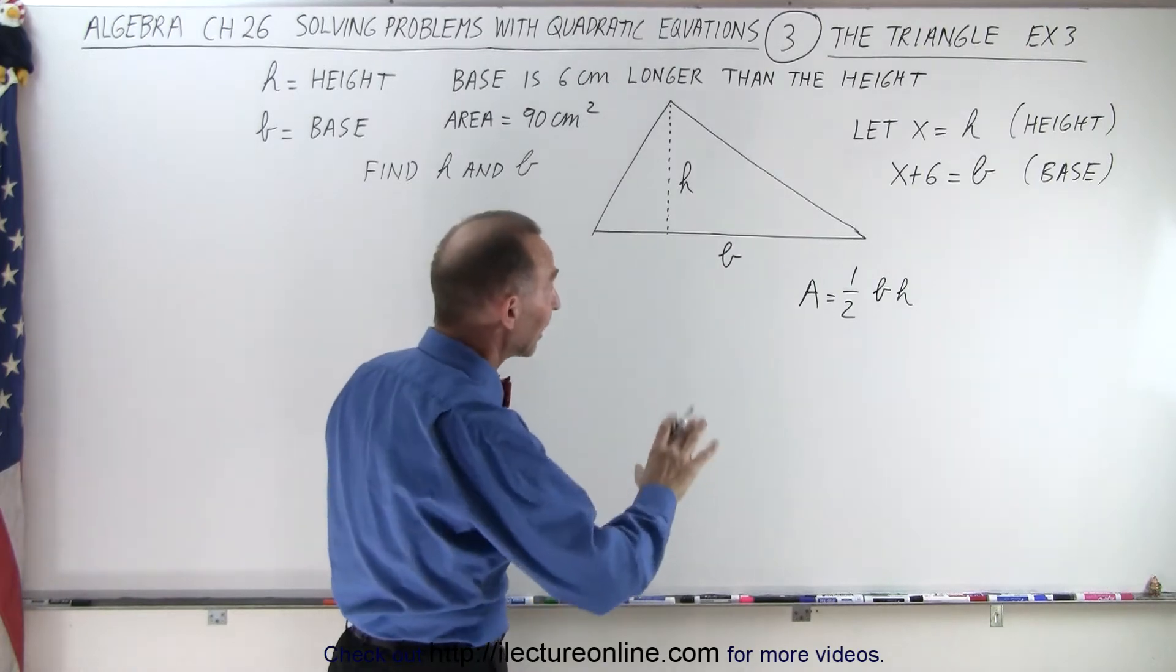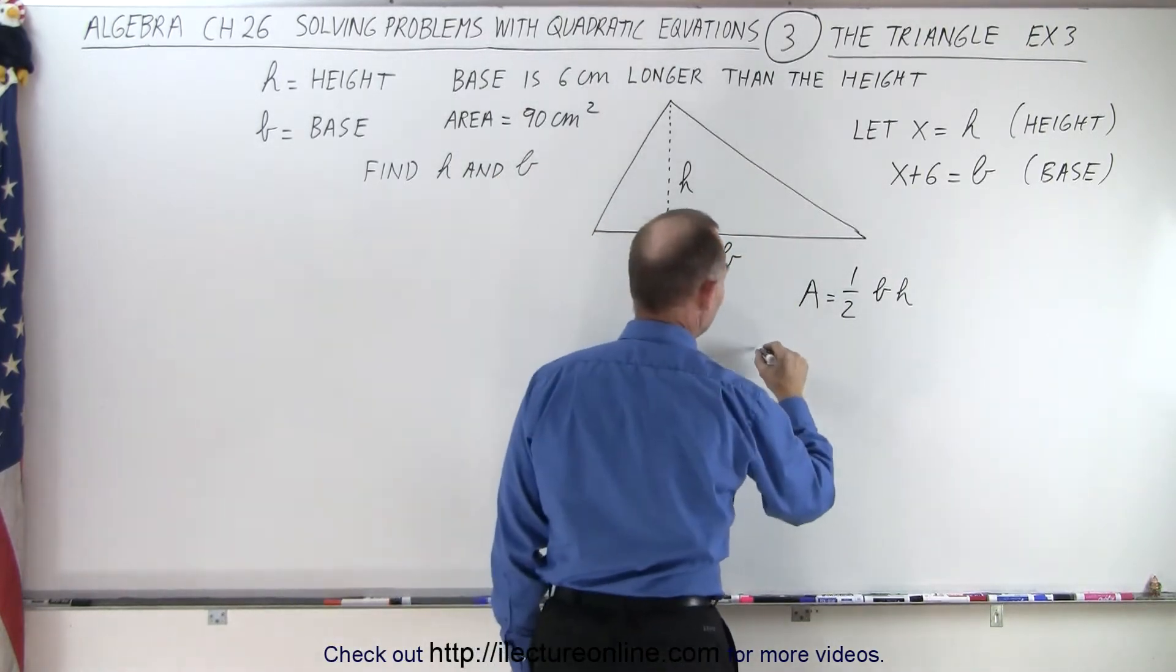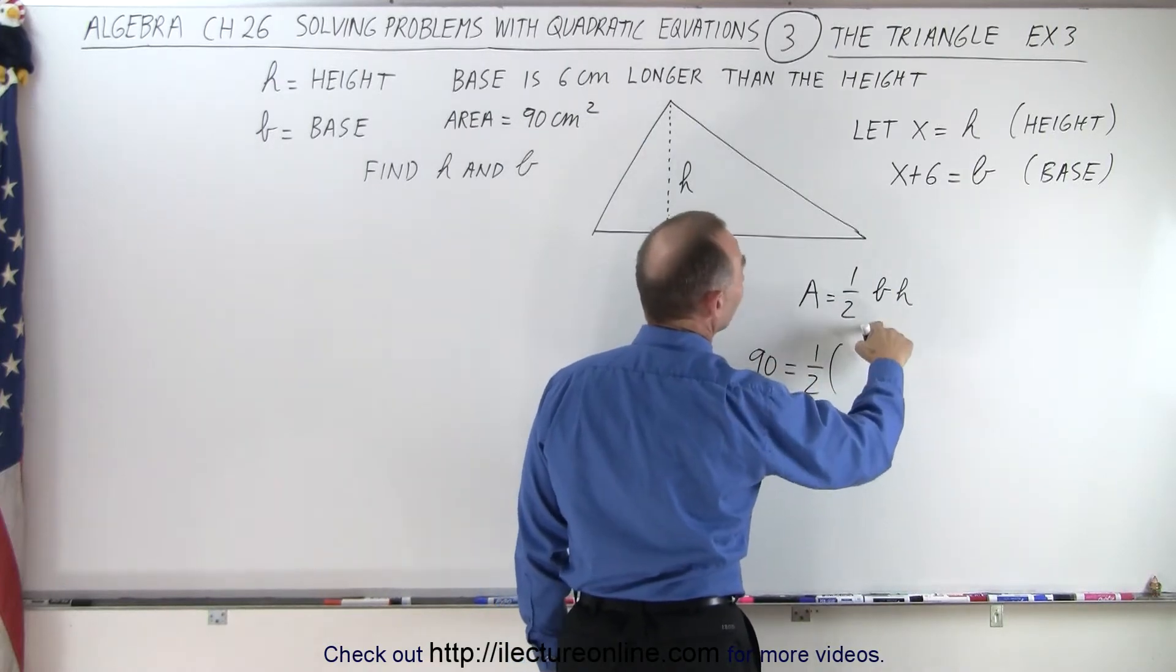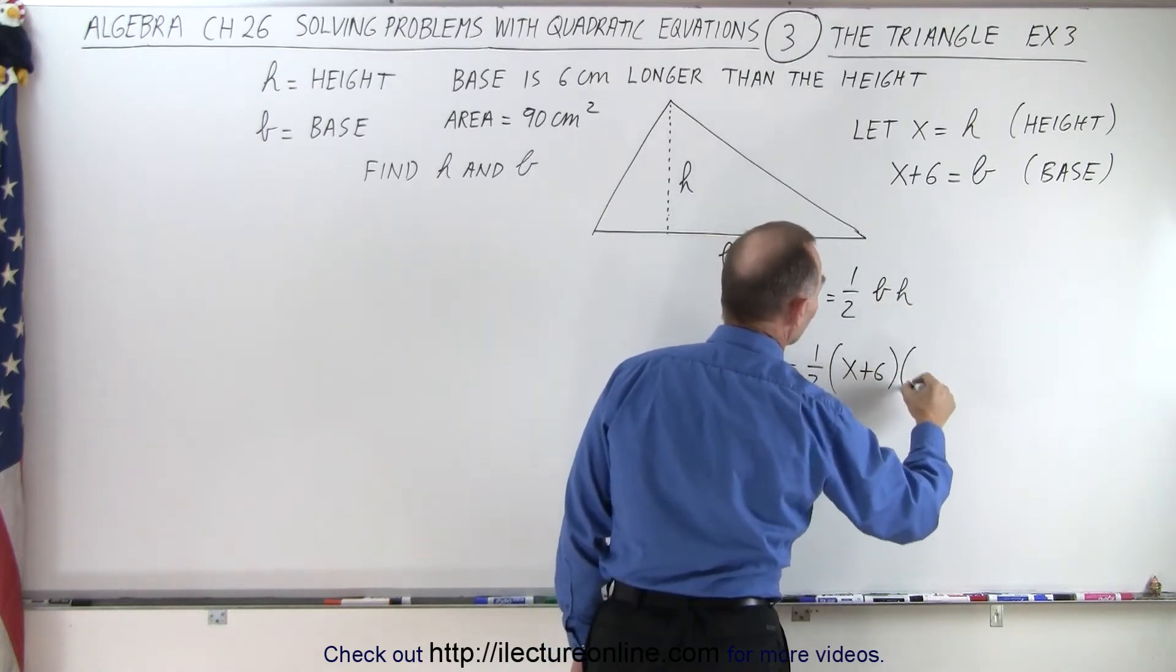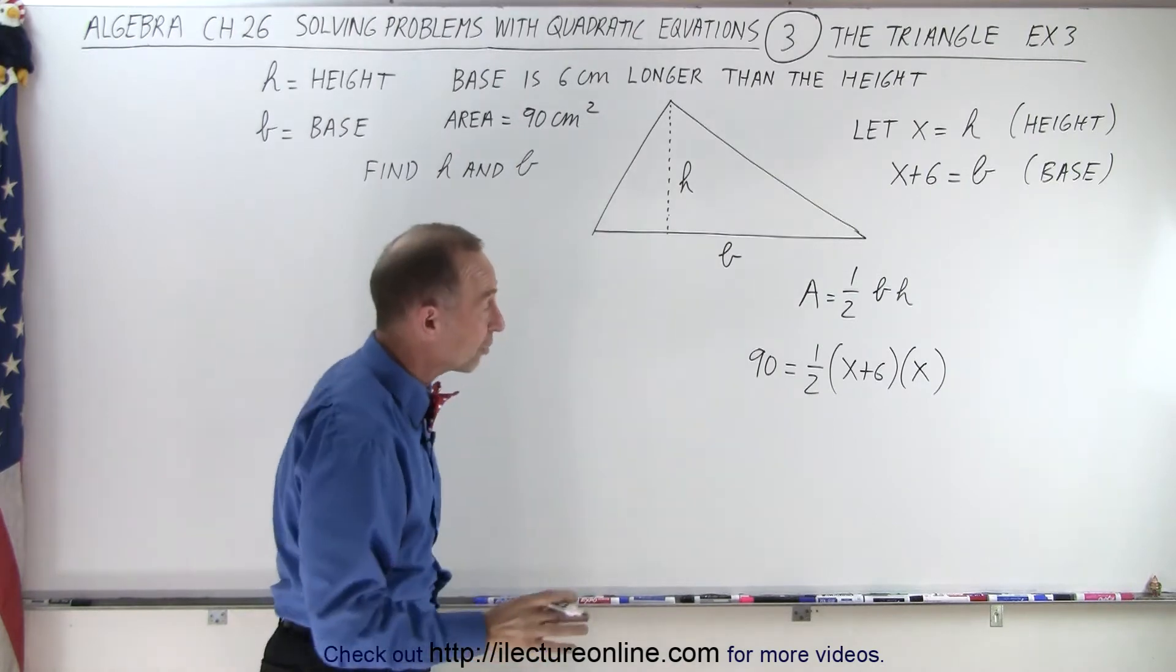We have the base and the height in terms of x, and we know what the area is equal to. So we can say that 90 is equal to one-half times the base, which is x plus 6, and the height is equal to x. Now we have a quadratic equation with the variable x.